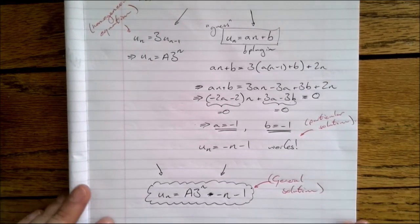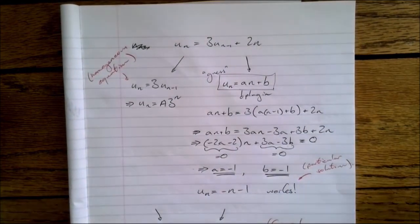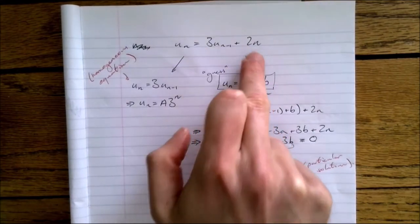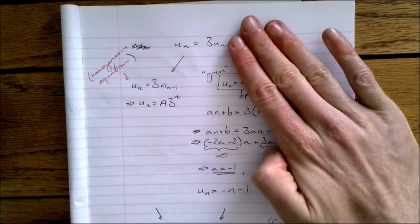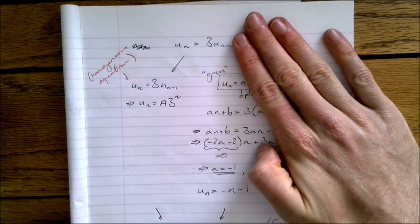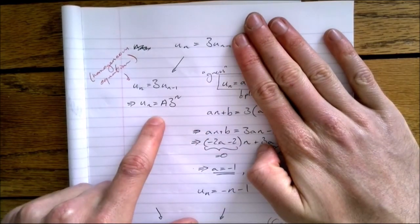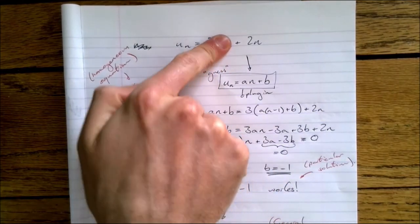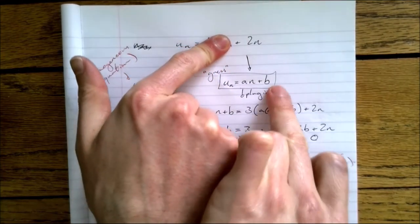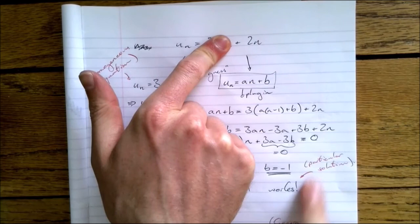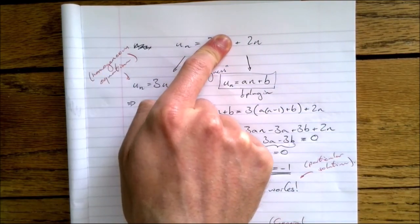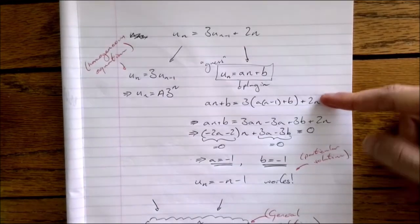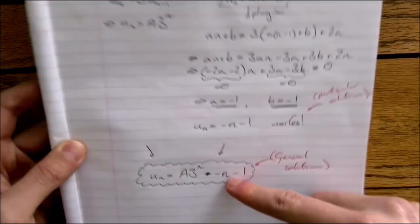So, an overview: if we have a recurrence that's multiplying something and adding something on, we split it into two parts. We solve the homogeneous bit first. Then we find a particular solution — a guess — that works for the full recurrence by plugging it in. Then we add them together to get the general solution.